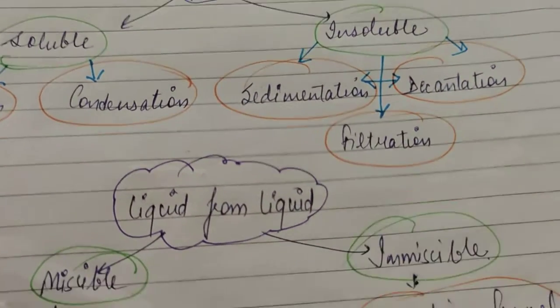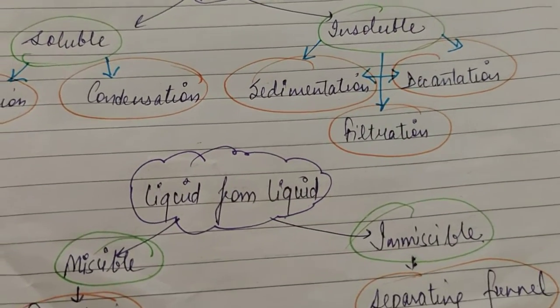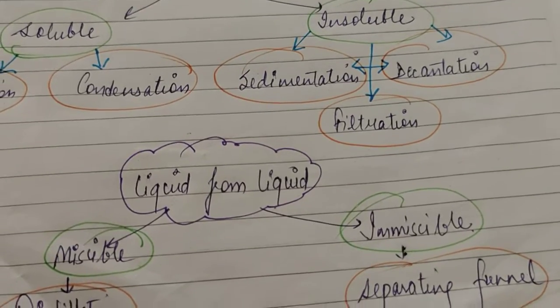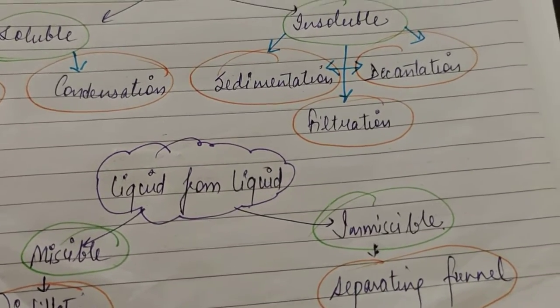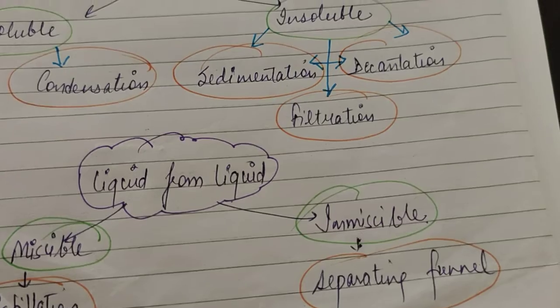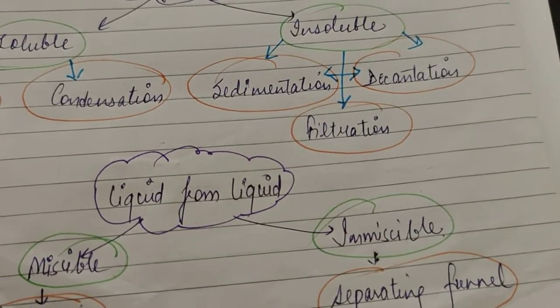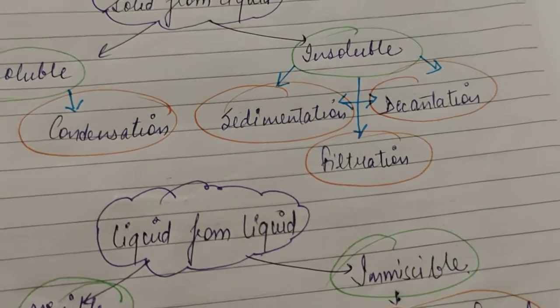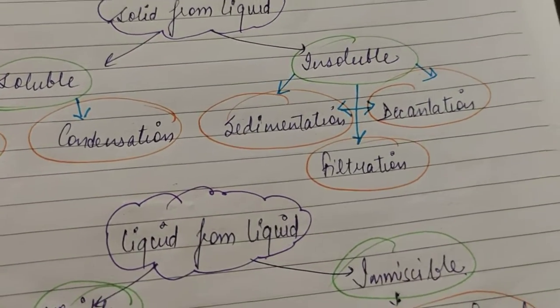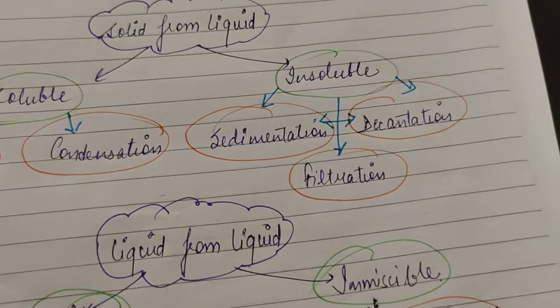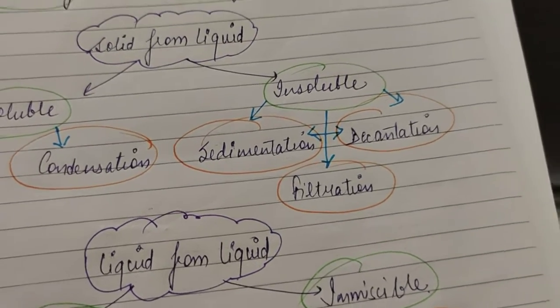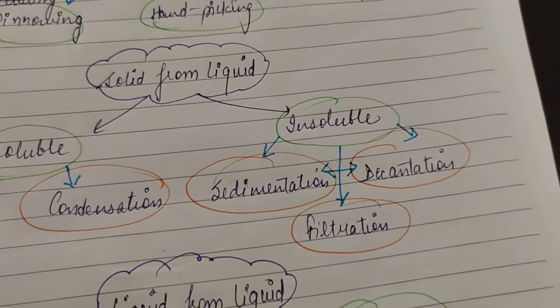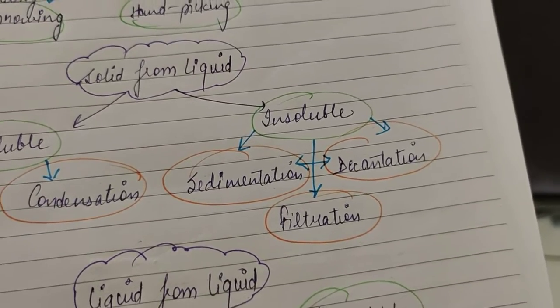And what is done in filtration? In this, the solution is allowed to pass through the filter paper. The impurities, or you can say the residue, that is remained in the filter paper, and the liquid passes through the filter paper and is collected in another container. So what is the name given to the substance which is left in the filter paper? That is residue. And the component which is taken in another flask, that is known as filtrate.